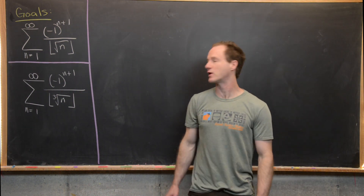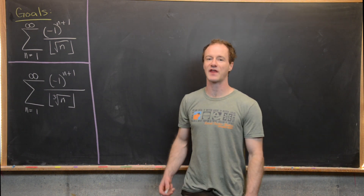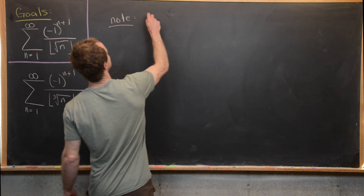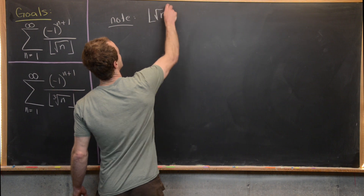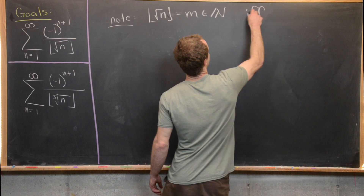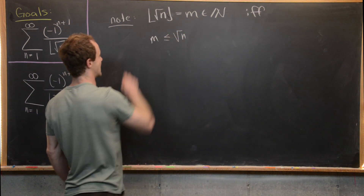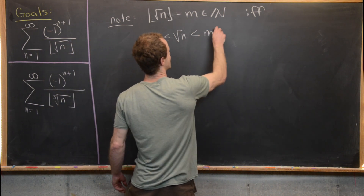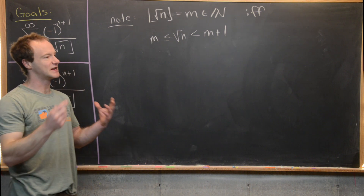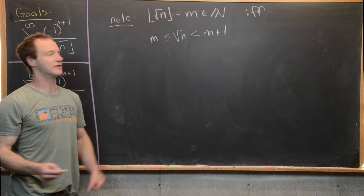Generally the first thing you want to do whenever you're working with expressions involving the floor function is somehow rewrite it without the floor function. We're going to do that in the following way. The floor of the square root of n equals m, which is a natural number, if and only if the square root of n is greater than or equal to m and strictly less than m plus 1. That just follows from the definition of the floor function — it is the greatest integer that is smaller than the square root of n.